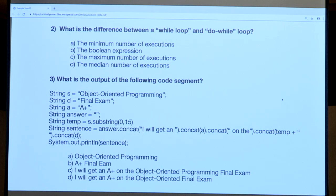Looking at the answer choices: A addresses the minimum number of executions, which is the correct answer. B refers to a Boolean expression — while loops always have a Boolean expression regardless of which type, so that's not right. The other choices are oriented towards the number of executions.